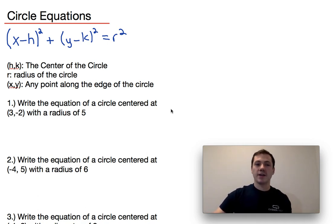So what we have here is the equation for a circle: x minus h squared plus y minus k squared equals r squared.